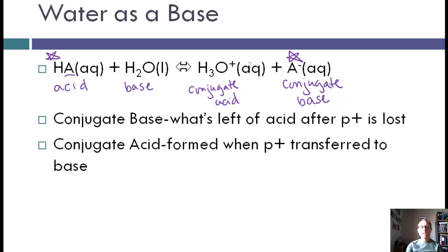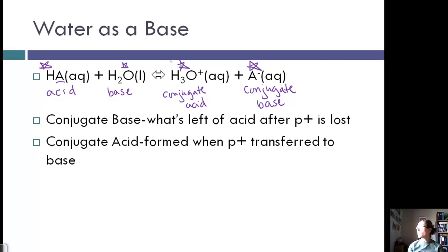The conjugate acid is formed when the proton is transferred to the base. So the base accepted the proton, and now it became H3O+.